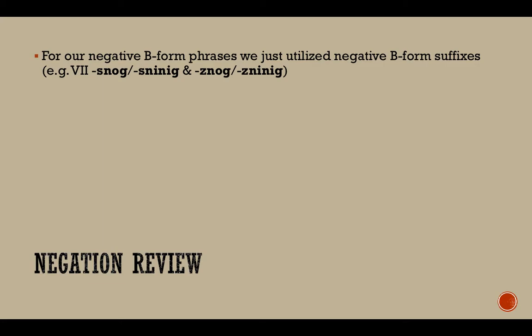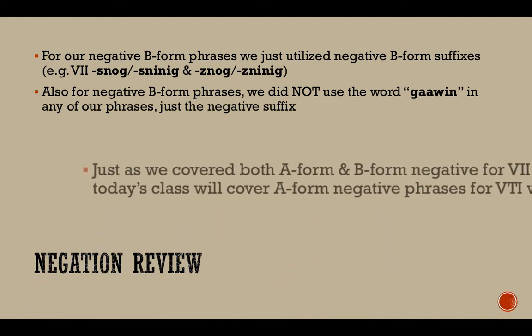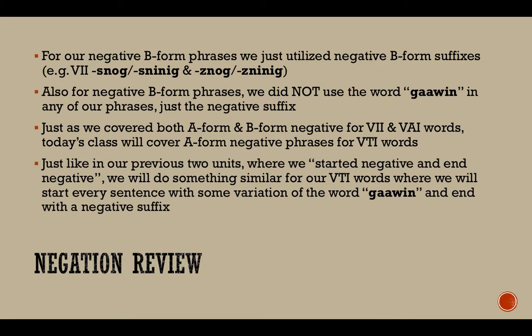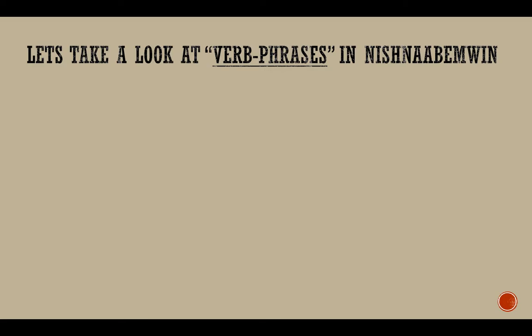For our negative B-form phrases, we just utilize negative B-form suffixes. For example, the VII unit used 'snug,' 'sninig,' 'znug,' and 'zninig.' Also for negative B-form phrases, we did not use the word 'go in' — just the negative suffix. Just as we covered both A-form and B-form negative for VII and VAI words, today's class will cover A-form negative phrases for VTI words, where we start every sentence with some variation of 'go in' and end with a negative suffix.